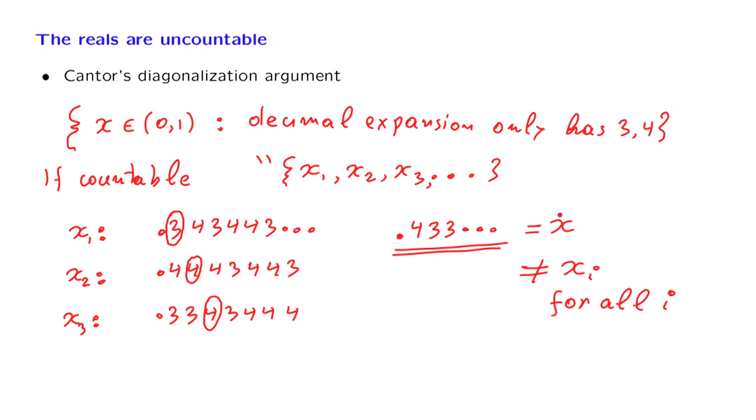So we have an element of this set which does not belong to this sequence. Therefore, it cannot be true that this set is equal to the set formed by that sequence. And so this is a contradiction to the initial assumption that this set could be written in this form.